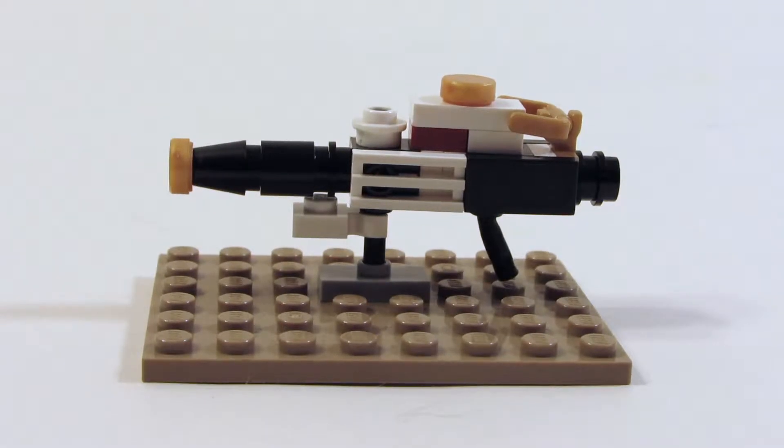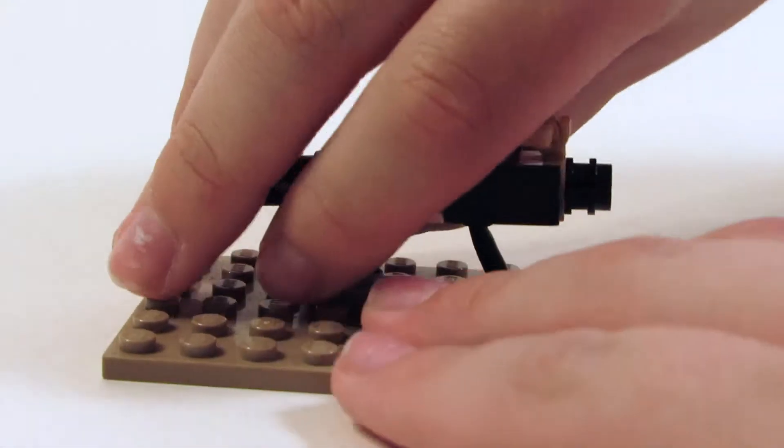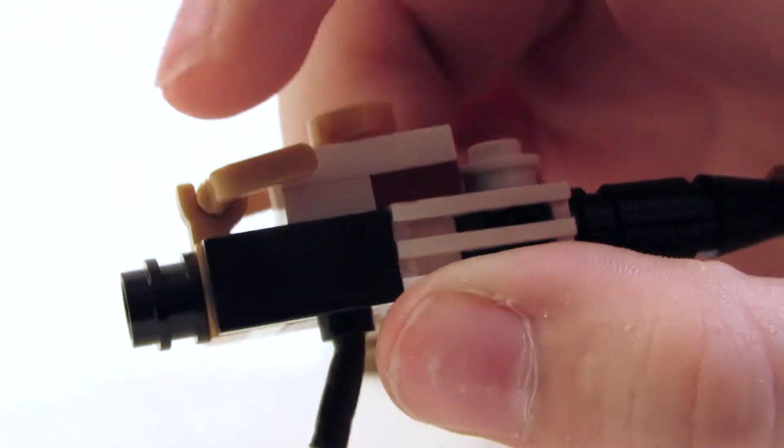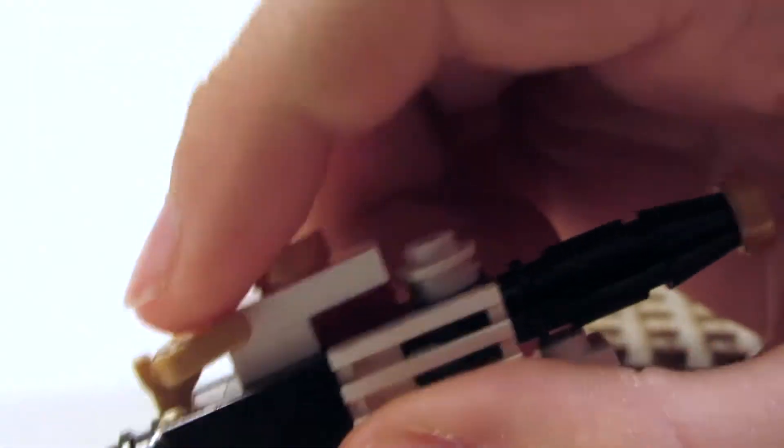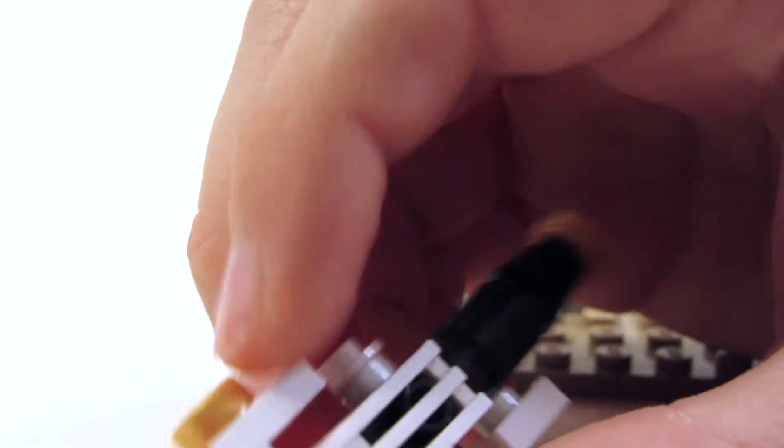For the Gjallarhorn, you can see that it's quite accurate to the real Gjallarhorn. In the front, this gold section kind of forms that face on the front of it, and it kind of goes up, continues on, and then there's this red section here that looks like the little symbol on the back of it.